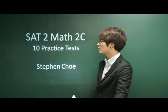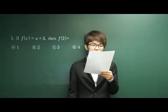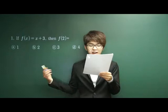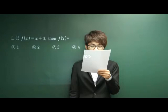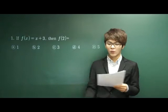Let's start with question number 1. If f(x) is equal to x plus 3, then what is f(2)? We don't even need to write anything on the board for this problem. Simply put 2 in place of x, and you get 5 as the answer. Therefore, E, 5, is the answer. Easy question.